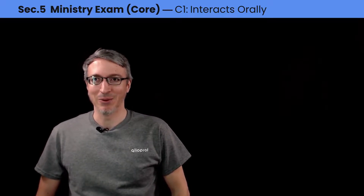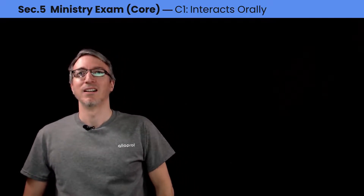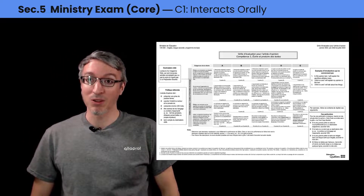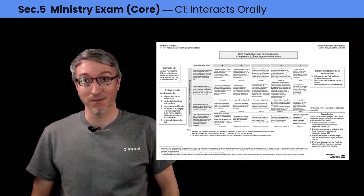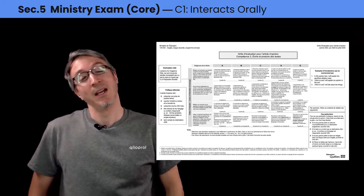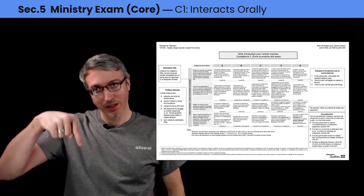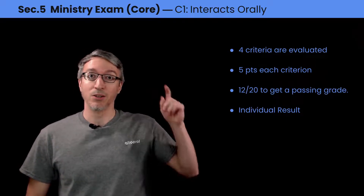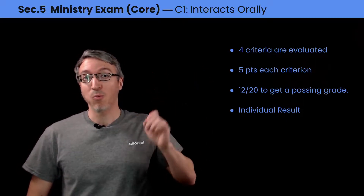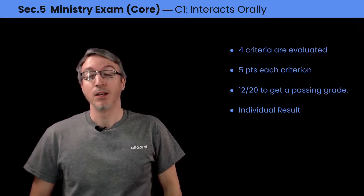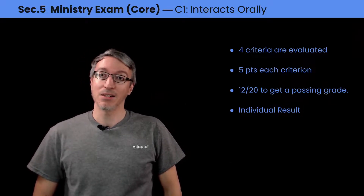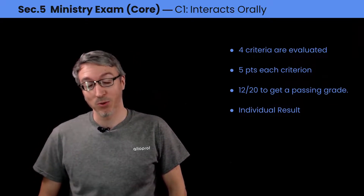First, I want to talk about the ministry rubric your teacher will use to evaluate you. When we look at this, it looks overcomplicated, so I want to simplify it to clarify it and make it simpler for you. If you really want to see it, click on the link in the description below. In the grid, you will find four criteria, five points for each criterion. You need a grade of 12 out of 20 to get a passing grade, and it's an individual result, even though you're in a group discussion.